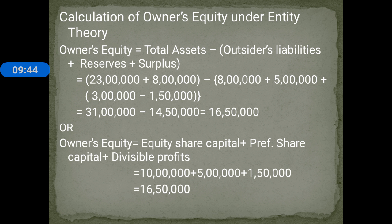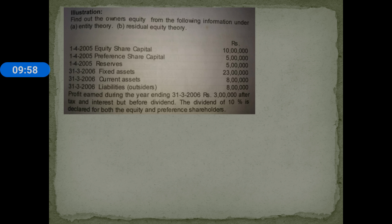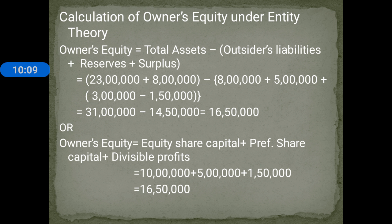We can also apply an alternate formula: Owners' Equity = Equity Share Capital + Preference Share Capital + Divisible Profits. That is ₹10 lakh + ₹5 lakh + ₹1 lakh 50,000 = ₹16 lakh 50,000. Both formulas give the same answer of ₹16 lakh 50,000.